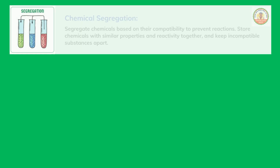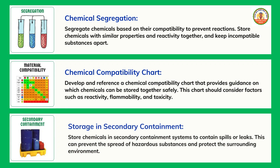Storage in Secondary Containment: Store chemicals in secondary containment systems to contain spills or leaks. This can prevent the spread of hazardous substances and protect the surrounding environment.